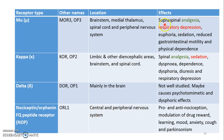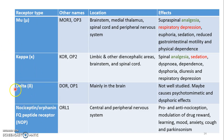The effects of the mu receptor include supraspinal analgesia, respiratory depression, euphoria, sedation, reduced gastrointestinal motility which can lead to constipation, and also physical dependence. The kappa receptor also leads to analgesia, mainly spinal analgesia, sedation, shortness of breath, dependence, dysphoria, diuresis, and respiratory depression. The mu receptor is the main receptor, and the kappa and other receptors play a more minor role.